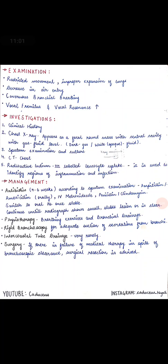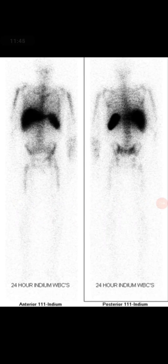Fifth investigation is radioactive indium-111 labeled leukocyte uptake. This is used when other radiographic techniques like chest X-ray or CT scan are contraindicated. In this test, WBCs accumulate where inflammation and infection are present. Since WBCs are more concentrated in infected areas, this technique identifies regions of inflammation — in lung abscess, WBC concentration is higher in the affected lung area.